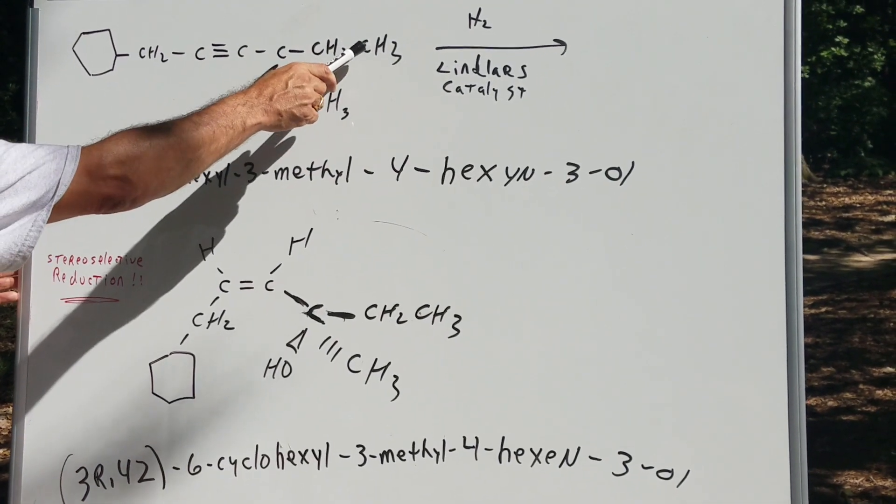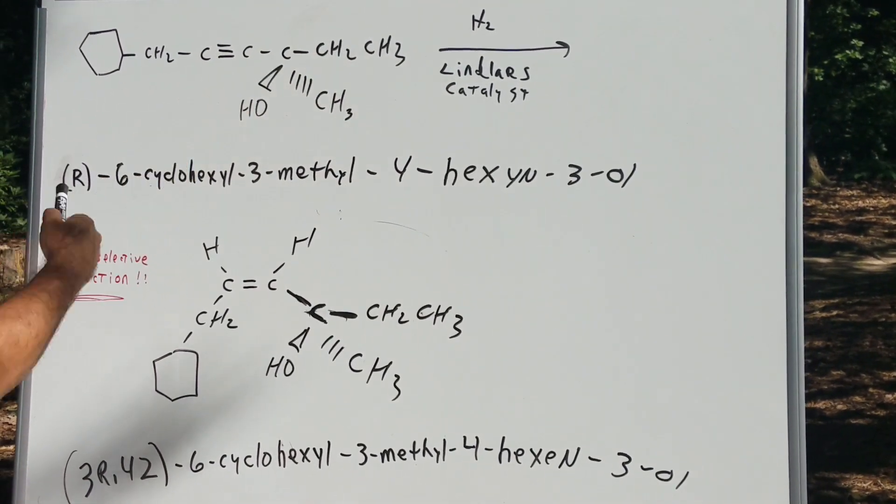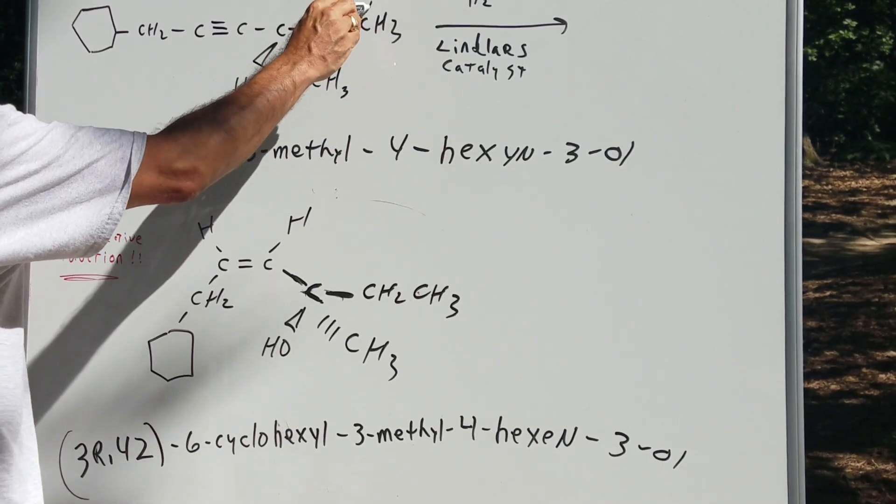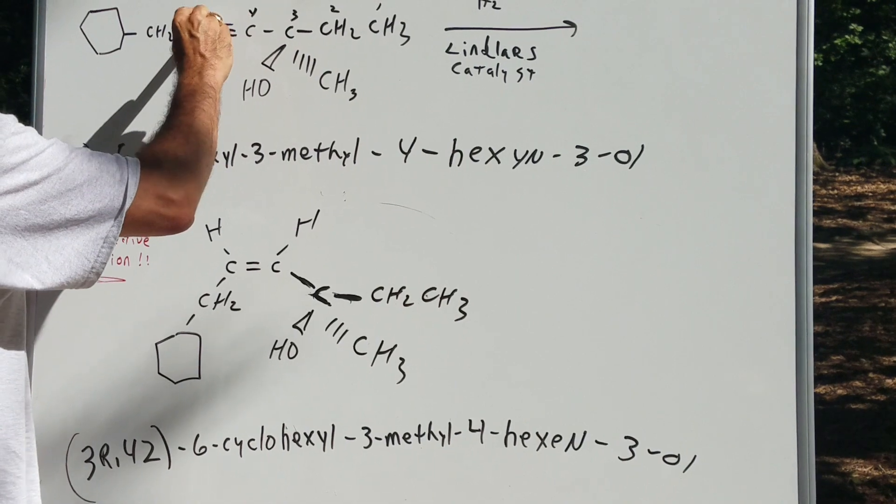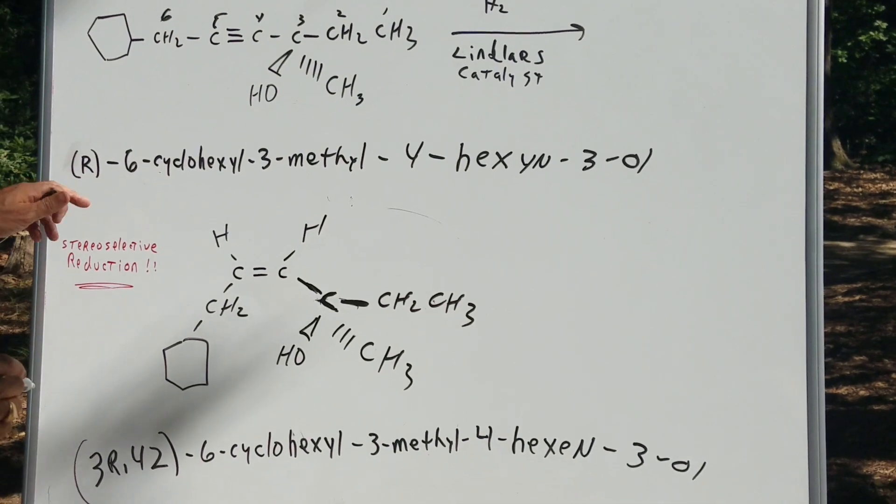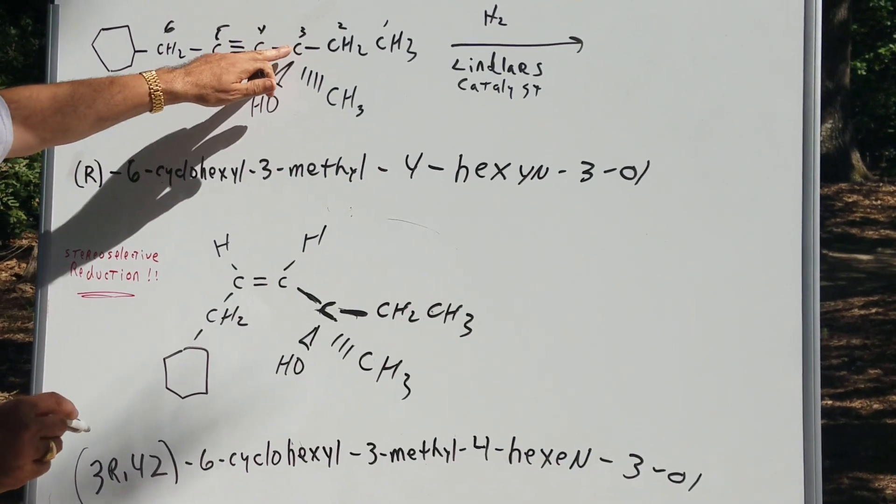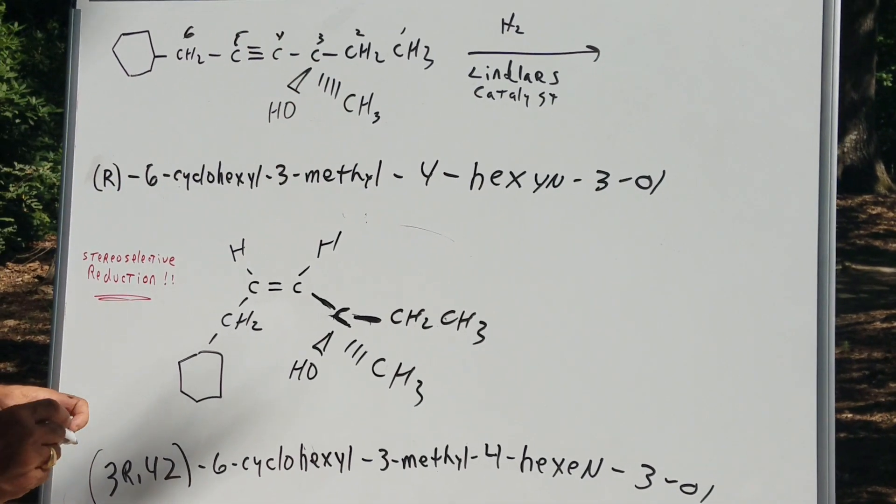We're going to number it from here. So you can see the OH is going to be on group number three. So if we number this as one, two, three, four, five, six, we get a six, and this is a cyclohexyl group. On the number three carbon, there's going to be a methyl.